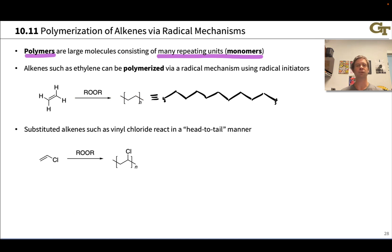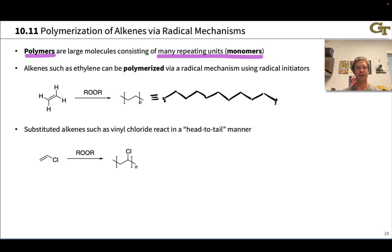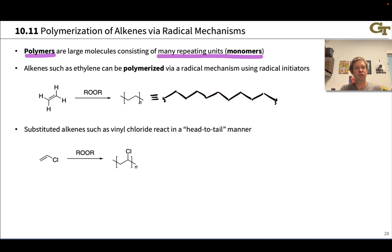Polyethylene, for example, is an extremely important polymer that can be made through radical polymerization via repeated radical additions to new ethylene molecules. We just get a long chain of CH2 groups where each pair of adjacent CH2s comes from an ethylene molecule.